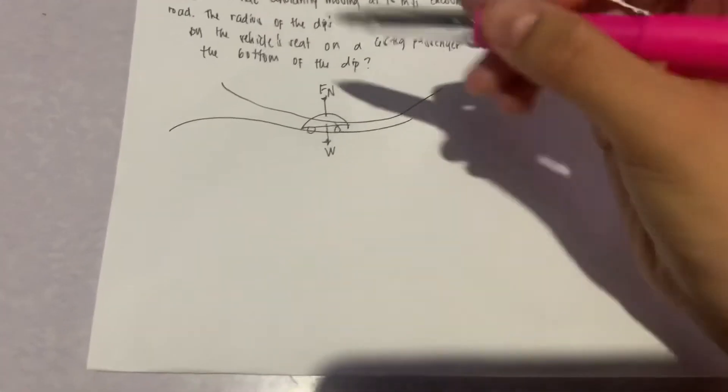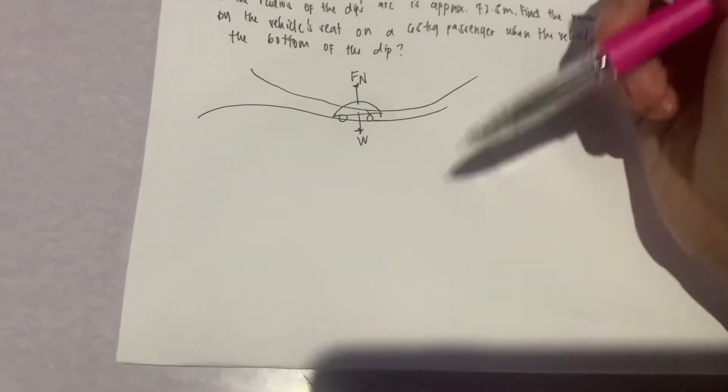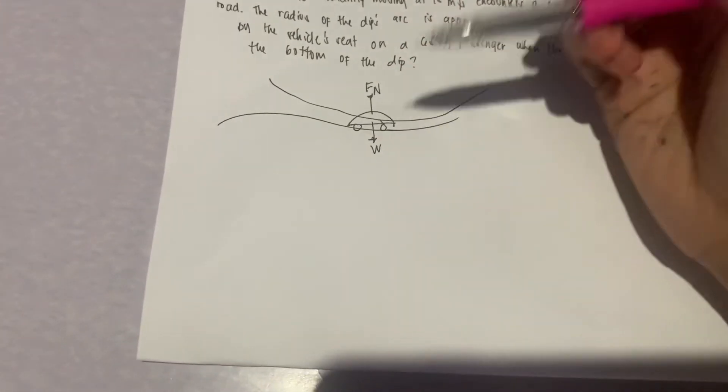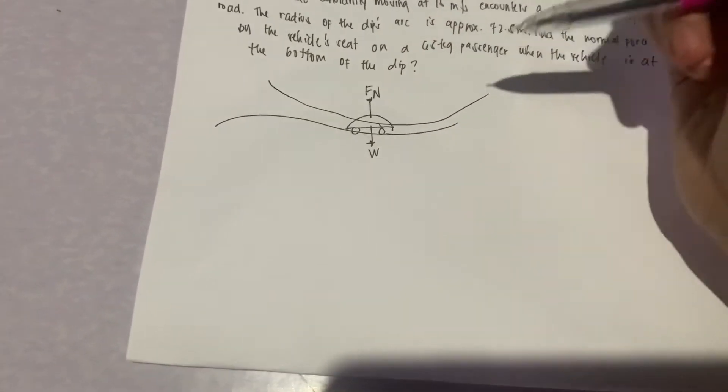Gear natin. Ayan. So let's see, ito yung curve natin, and ito yung vertical circular motion ng vehicle.